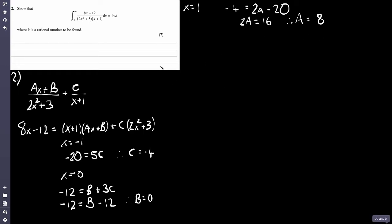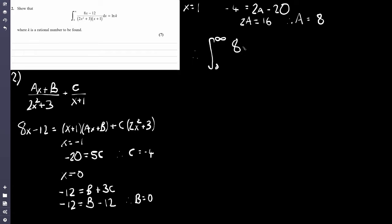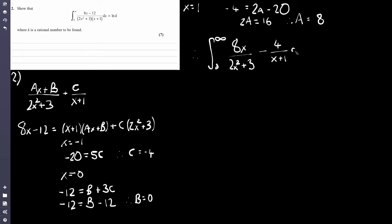So we've done the partial fractions. Now we can perform the integration. Let's rewrite our integral. With a equals 8 and b equals 0, we have 8x over (2x squared plus 3), and since c is minus 4, we have minus 4 over (x plus 1). This is integrated from 0 to infinity with respect to x.